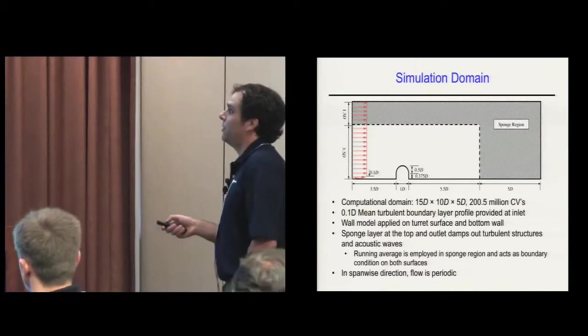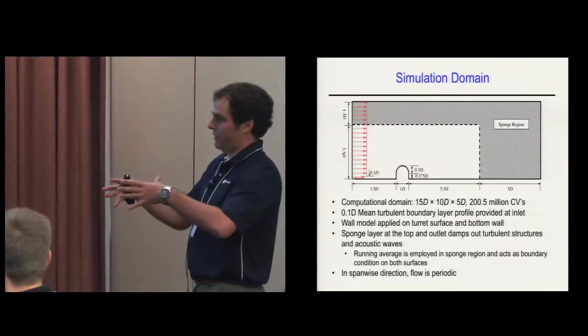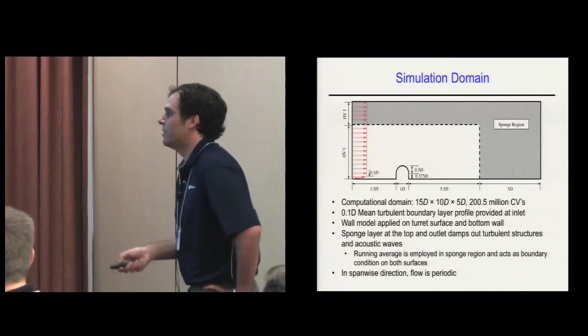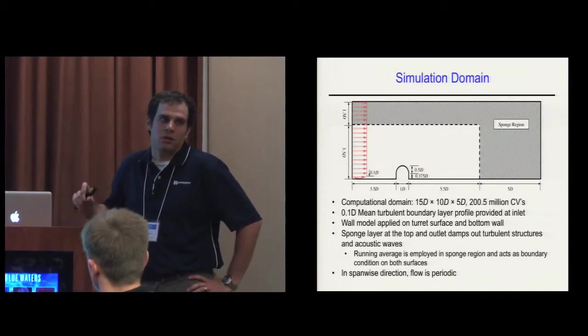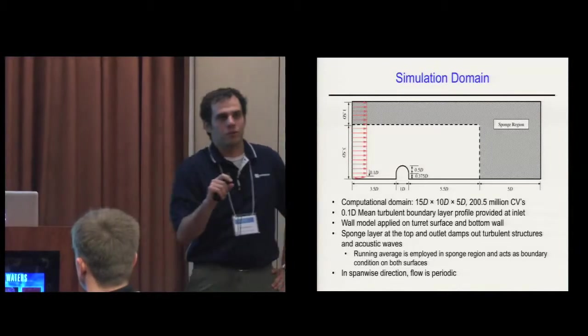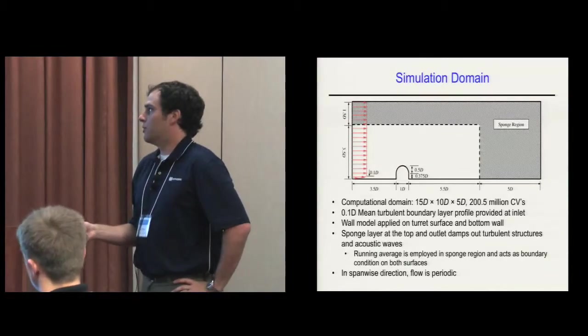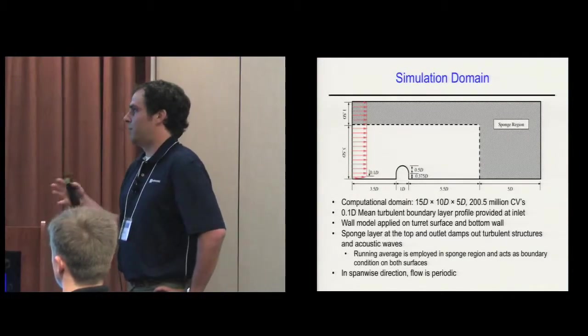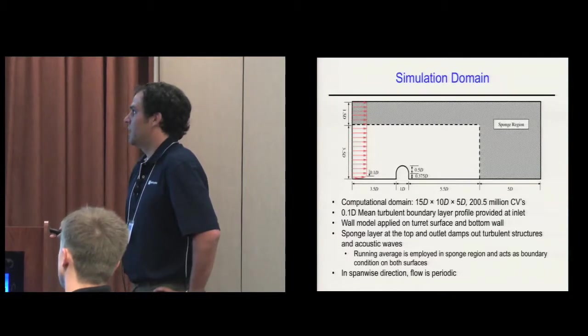The simulation domain has a mesh that is 15D, where D is the diameter of the turret. The turret is a cylinder with a hemisphere mounted on top. The inlet condition uses a mean turbulent boundary layer profile that's one tenth of the diameter of the turret, based on wind tunnel experiments done at Notre Dame. The assumption is that the inlet boundary layer profile is really thin compared to the optically active area.